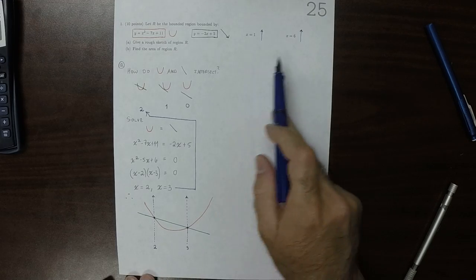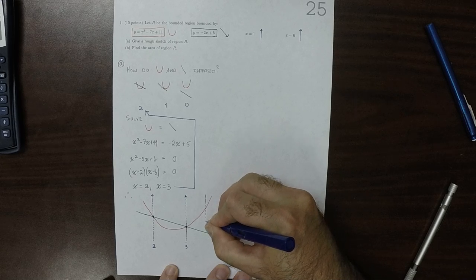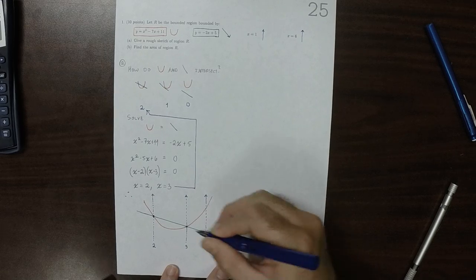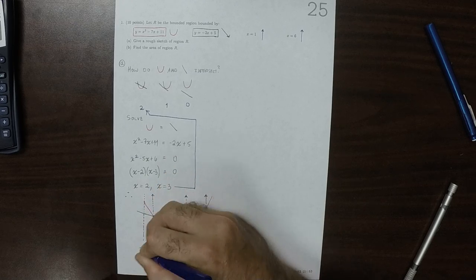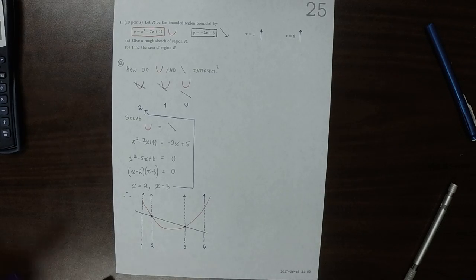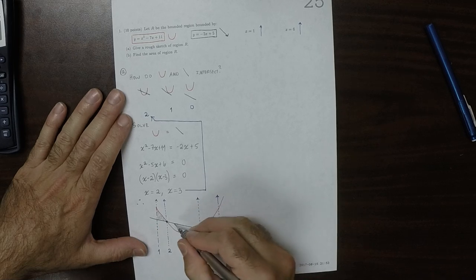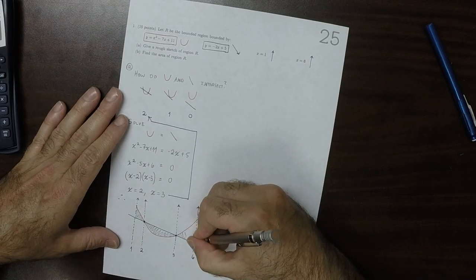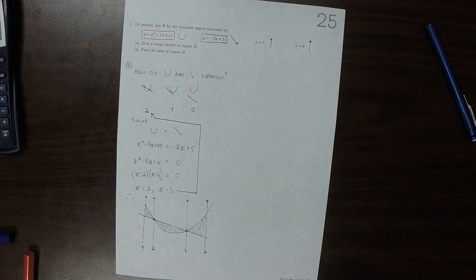And then we have two more lines at 1 and 6. So here's 6 over here, and here's 1 over here. So the region in question is this shaded stuff. Okay, so that's the answer to part A.